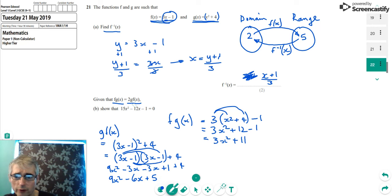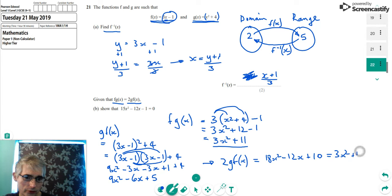And in fact, we're told we've got 2g of f of x. So it's going to follow that 2g of f of x is actually, just multiplying by 2, is 18x squared minus 12x plus 10. And we're told that that equals the f of g of x, which we've worked out here. So I'm going to equate that to it. I'm going to say equals 3x squared plus 11.